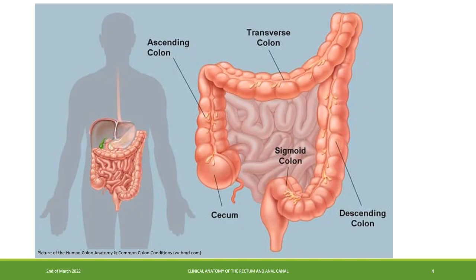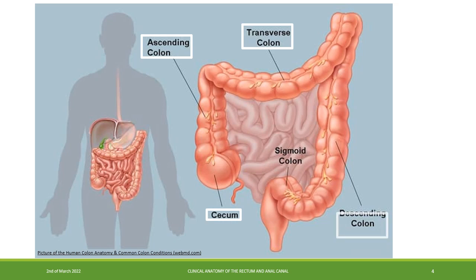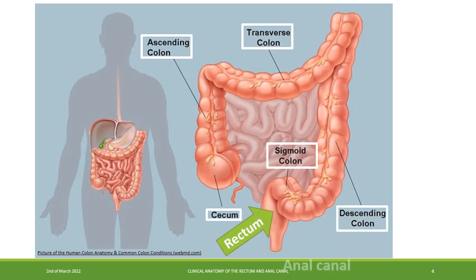The large intestine consists of cecum, ascending colon, transverse colon, descending colon, sigmoid colon, rectum and anal canal.